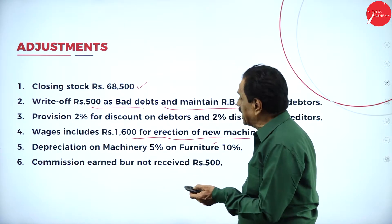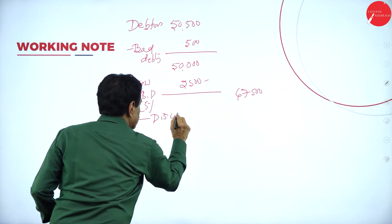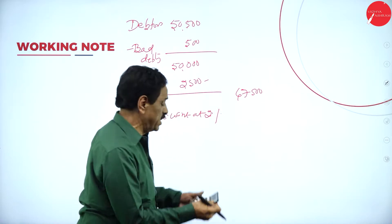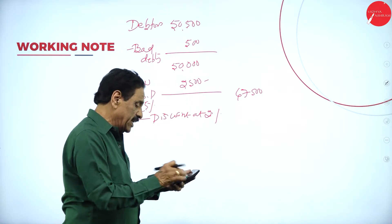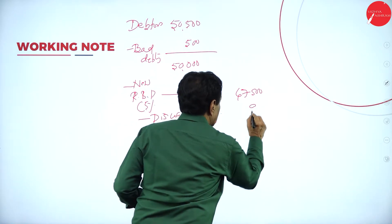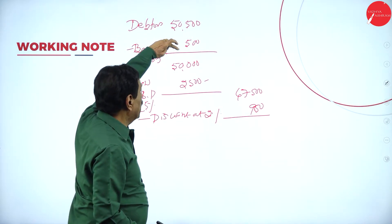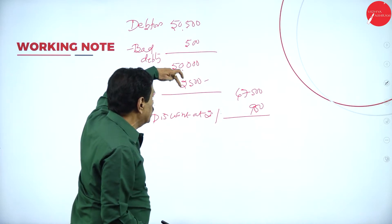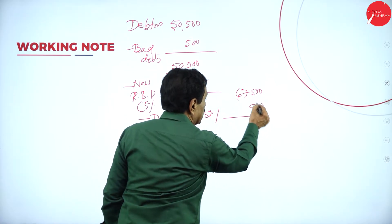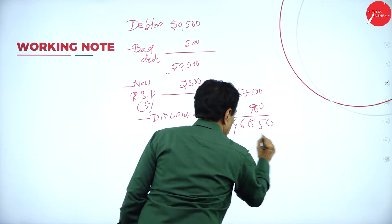Then, provision of 2% discount on debtor — on 47,500, that is 2% which equals 950. So the working note shows: 50,500 minus bad debt 500 = 50,000; minus new RBD 2,500 = 47,500; minus discount at 2% = 950; balance is 46,550.